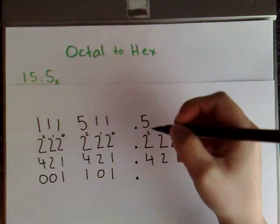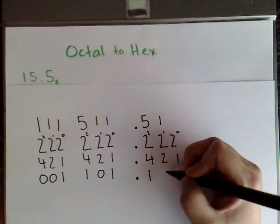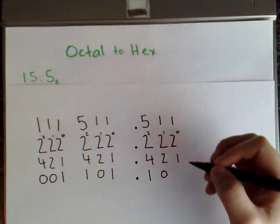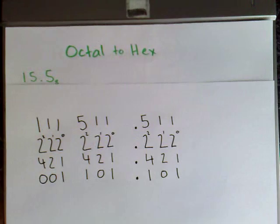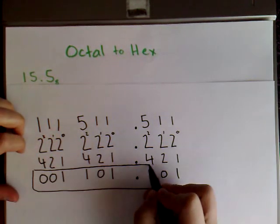1 into 1 fits once. Keep my decimal. 4 into 5 fits once with the remainder of 1. 2 into 1 equals 0. Bring them across. 1 into 1 fits once. So this is the number in its binary form.